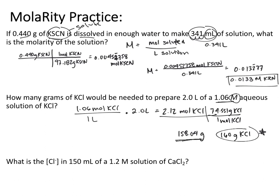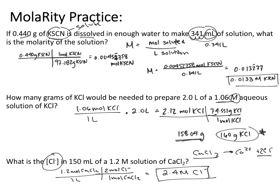This last one asks: what is the concentration of Cl- in 150 mL of a 1.2 M solution of CaCl2? For every one mole of CaCl2, we get two moles of Cl-. Using our mole ratio of two moles Cl- per one mole CaCl2, that gives us 2.4 molar Cl- as the concentration. Those are our calculations using molarity.